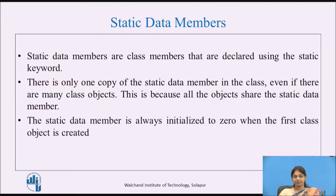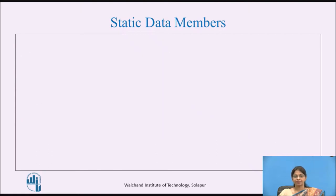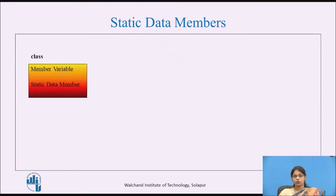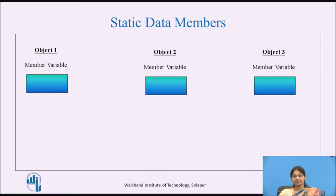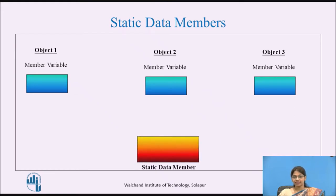The static data member is always initialized to 0 when the first class object is created. Consider a class which contains one data member and one static data member. For that class, consider there are three objects: object 1, object 2, and object 3. The memory for the data member will be created separately for all the objects. But for the static data member, the memory is allocated only once and that will be shared by all three objects.